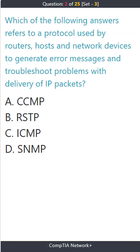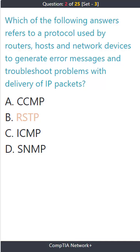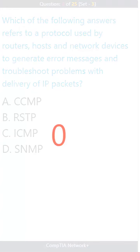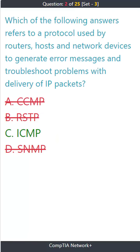Question 2. Which of the following answers refers to a protocol used by routers, hosts, and network devices to generate error messages and troubleshoot problems with delivery of IP packets? A. ACCMP. B. RSTP. C. ICMP. D. SNMP. The correct answer is C. ICMP.